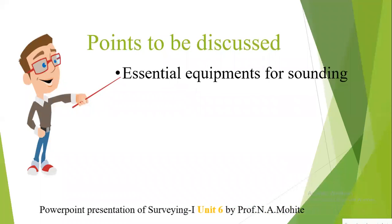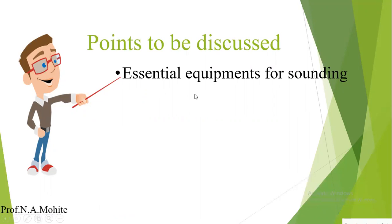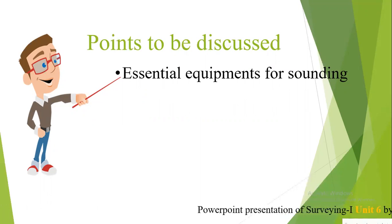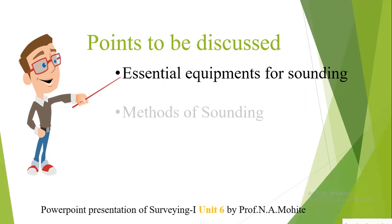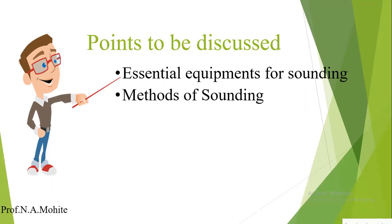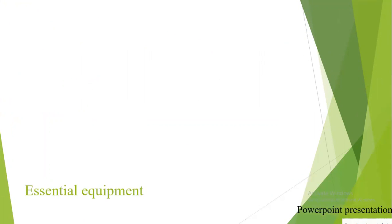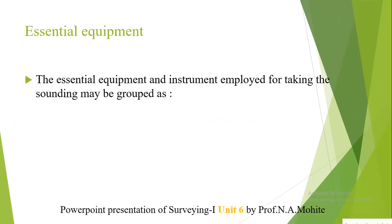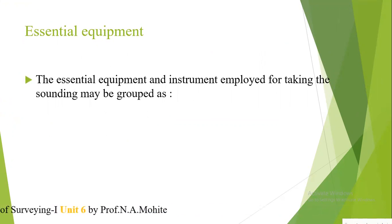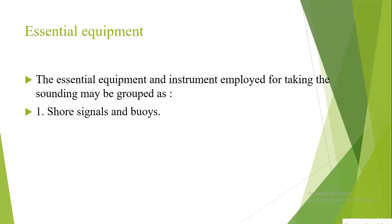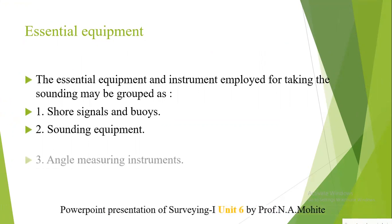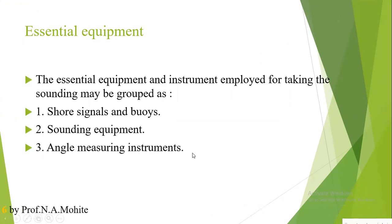In today's session we are going to see what are the essential equipment required for sounding, and what are the various methods of sounding. The essential equipment used for sounding are grouped into three categories: shore signals and buoys, sounding equipment, and angle measuring instruments.